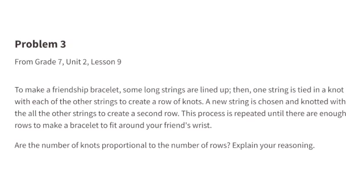Problem number 3 from 7th grade, Unit 2, Lesson 9. To make a friendship bracelet, some long strings are lined up. Then, one string is tied in a knot with each of the other strings to create a row of knots. A new string is chosen and knotted with all the other strings to create a second row. This process is repeated until there are enough rows to make a bracelet to fit around your friend's wrist.